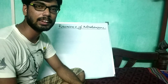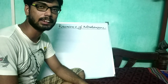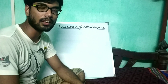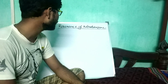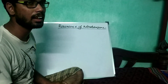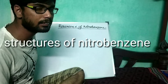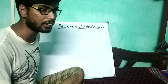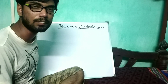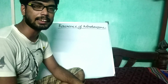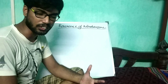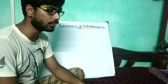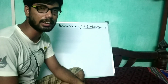Hello guys, welcome to my YouTube channel Chemistry Tips. Today I am going to draw a structure of nitrobenzene. In the previous video I have already discussed that the nitro group has the minus M effect, so it has a strong tendency to draw electrons from the benzene ring. So without wasting more time, let's start the video.